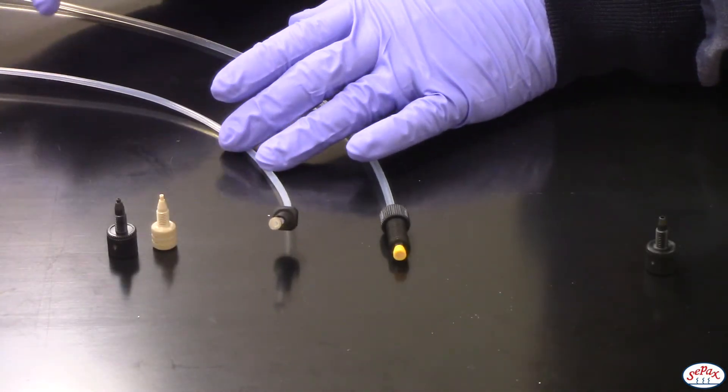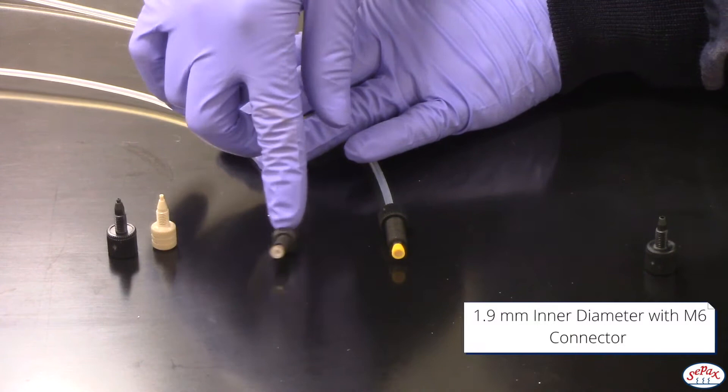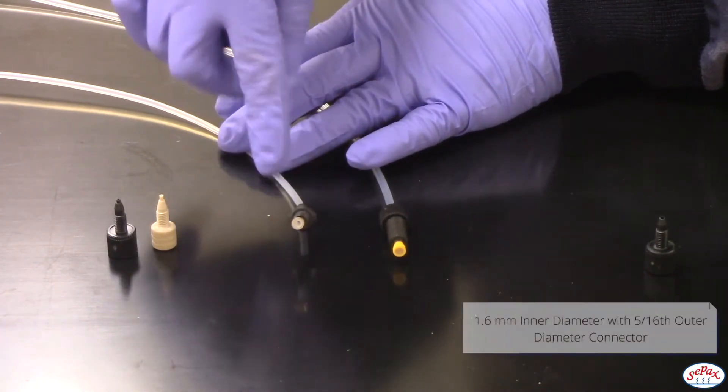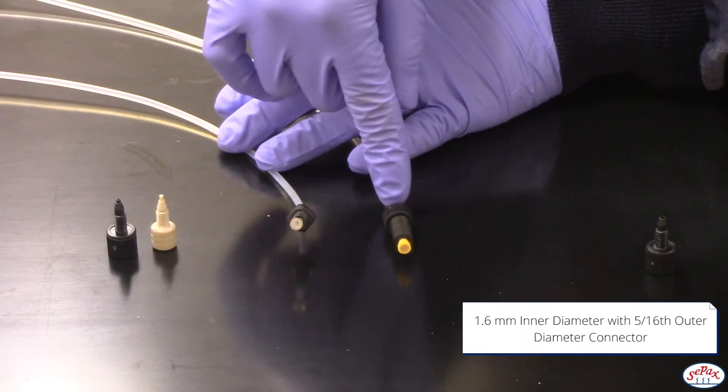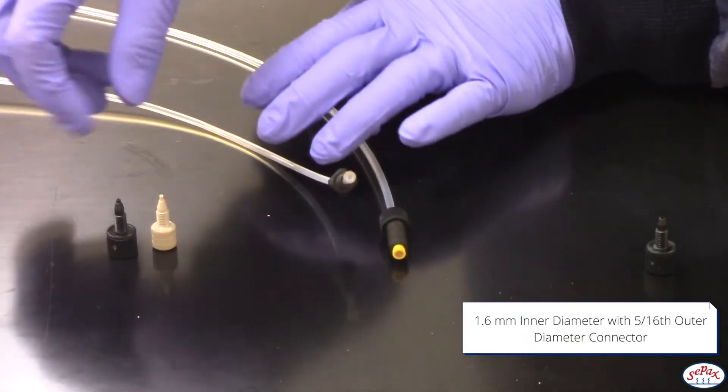For the larger diameter columns, we recommend using larger tubing with an inner diameter of 1.9 millimeter with an M6 connector, or tubing with an inner diameter of 1.6 millimeter or 1/16th with a 5/16th outer diameter connector.